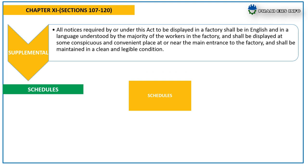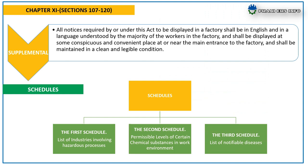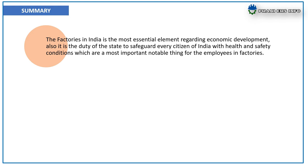Regarding the schedules: the First Schedule includes a list of industries involving hazardous processes; the Second Schedule includes permissible levels of certain chemical substances in the work environment; and the Third Schedule includes notifiable occupational diseases.